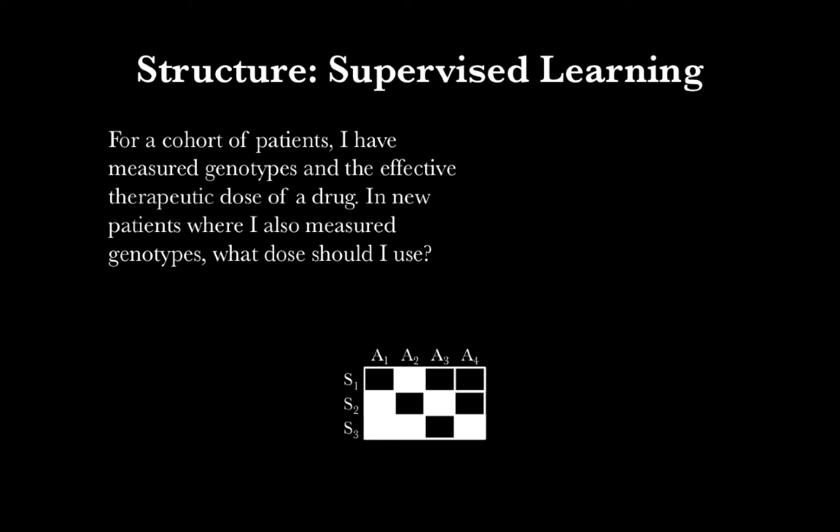So this is a supervised problem. Let's talk about how we can use the same terminology from the previous example to describe what's happening here. We have a cohort of patients, and we've measured their genotypes as well as the effective therapeutic dose of a drug. Since our end goal is to predict the effective dose for new individuals, our patients are going to be examples, and we're going to use the genotype information to predict new doses.